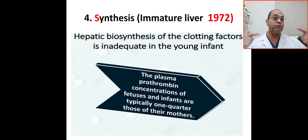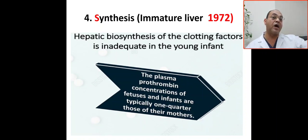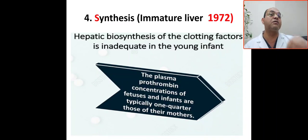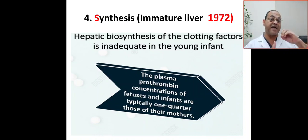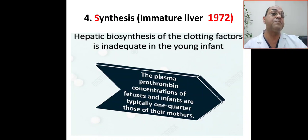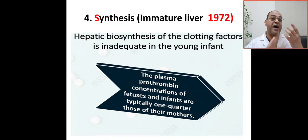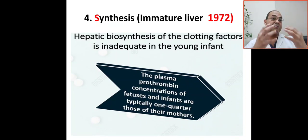The fourth factor is immature liver biosynthesis: the synthesis of clotting factors is inadequate in young infants. The vitamin K-dependent factors are 10, 9, 7, and 2. The plasma prothrombin concentration of the fetus and infant is typically one quarter of that of the mother — so the amount of clotting factors synthesized by the baby is one quarter compared to the mother.